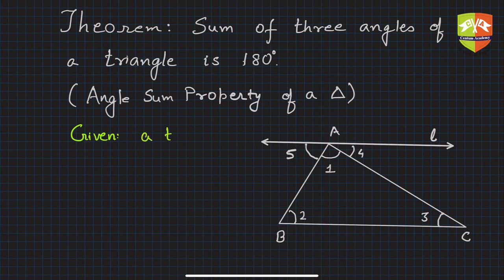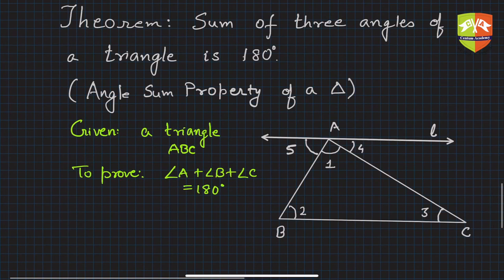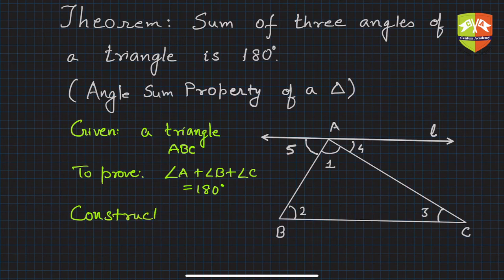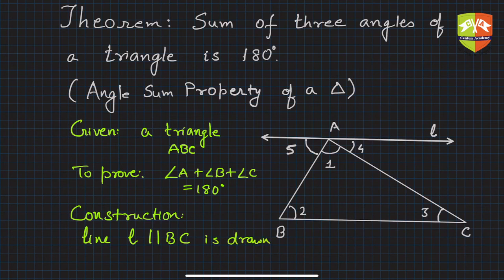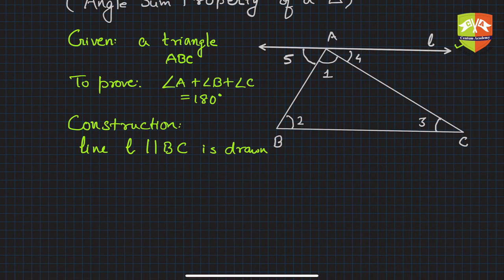Given: triangle ABC. To prove: angle A + angle B + angle C = 180 degrees. In the diagram I have labeled the angles with numerals — 1, 2, 3, 4, 5 — so you can see which angle is which. For the construction, I draw a line l parallel to BC through vertex A.